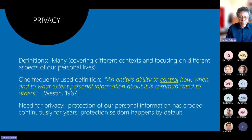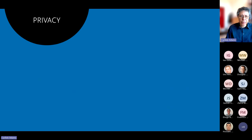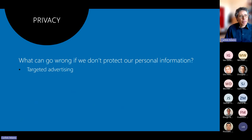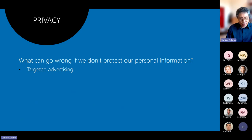Protection of our personal information has eroded continuously for many years and it almost never happens by default any longer. So what can go wrong? The first thing many people think about is targeted advertising. A company learns something about you — your preferences, your past purchases — and can now direct ads targeted specifically to your interests. That can be a good thing because you get advertised things you might want to buy, but it can also be a little annoying, so it's a privacy concern.